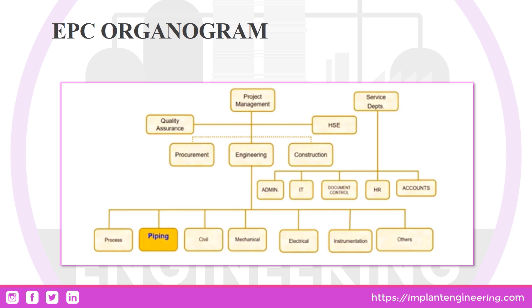Before and after the engineering section, there are two other sections highlighted through imaginary lines — procurement and construction. Though they are different departments, they are considered under project management itself. Without procurement you cannot do engineering, and without engineering you cannot do construction. There is also another department called service departments, which handles miscellaneous things like documentation controls, accounts, HR, and IT.